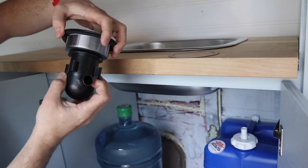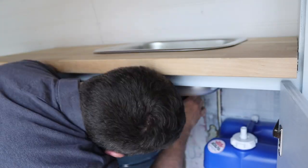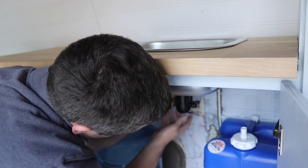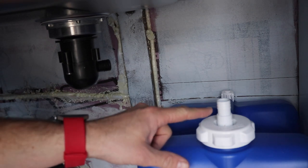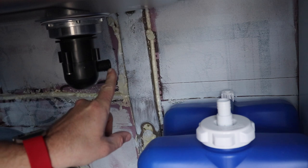So we'll take this and put it through the hole in the sink. Get the drain kind of pointed in the direction we want, so I'm going to point it backwards a little bit. I've got the barb fitting on the tank and the barb fitting on the sink drain.